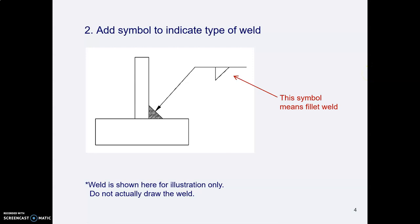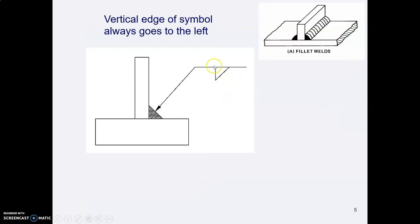Then you add the symbol. This triangular symbol means fillet weld, and you notice that the symbol is similar to the shape of the weld material. The vertical edge always goes to the left, no matter what. No matter what direction the arrow is pointing, vertical edge always goes to the left.